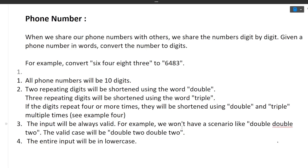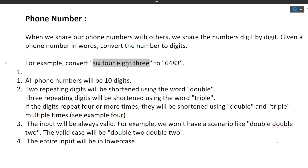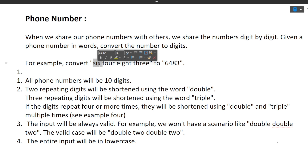Now let's start. Before starting, please hit the like button. We will first discuss the approach and then the coding part. The name of the question is 'Phone Number.' The question is: when we share our phone number with others, we share the digits one by one. Given a phone number in words, convert the number to digits. For example, convert 'six four eight three' to 6483.